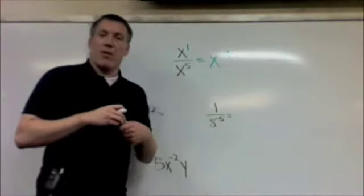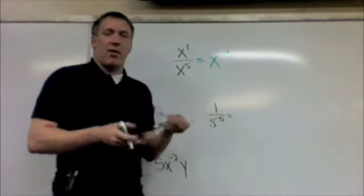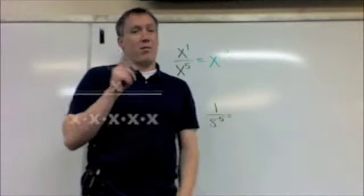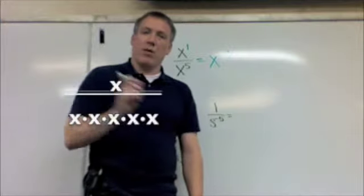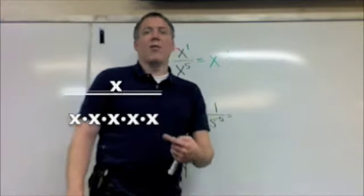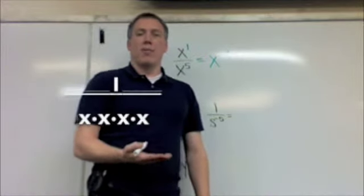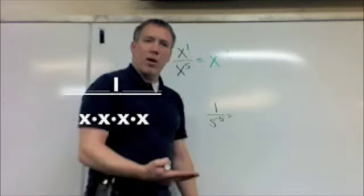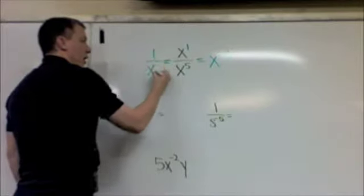Well, that seems kind of odd. Well, let's see what it means. x to the fifth is x times itself five times. And x to the one is just one x on the top. How many of those cancel? Well, hopefully, you can see just one cancels. So, all I'm left with now is one on the top and how many x's on the bottom? Four. So, in the same way, this is equal to one over x to the four.